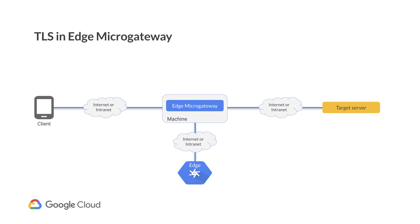In a typical Edge Micro Gateway architecture, we have four actors: the client, the micro-gateway itself, Apigee Edge, and the target server. In many cases, all actors would communicate with each other over an internet or intranet connection, which may not be trusted. By default, Edge Micro Gateway will talk to Apigee Edge over TLS.